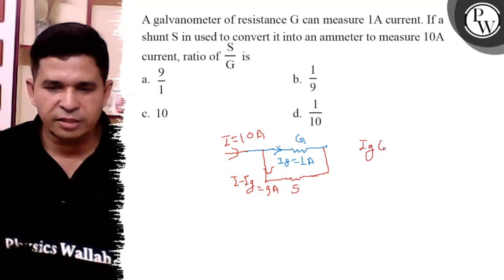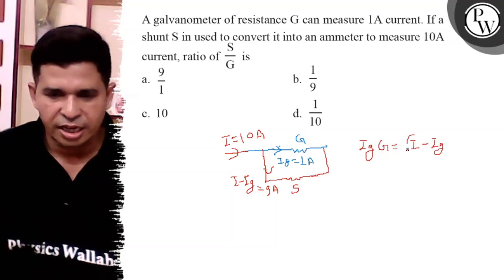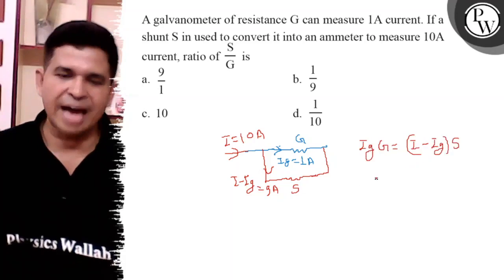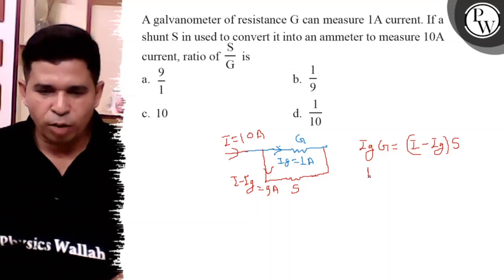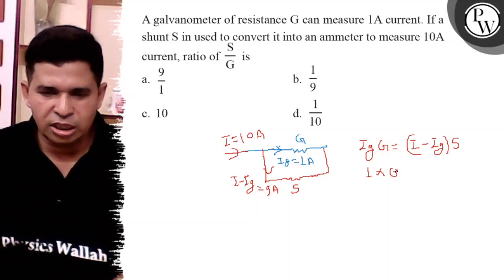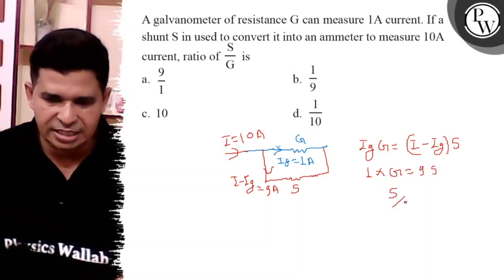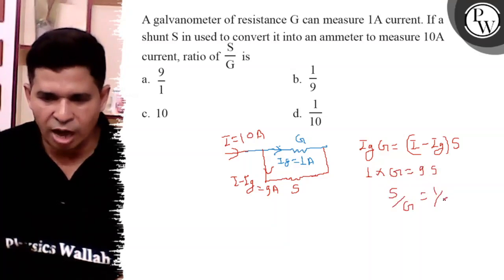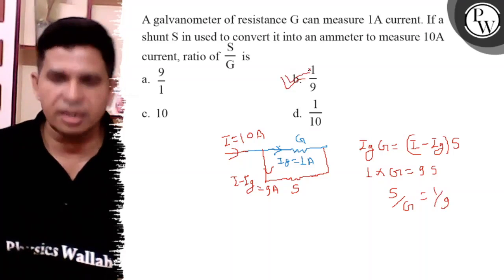So IG into G is equal to I minus IG into S, because in parallel voltage is constant. So IG is 1 ampere into G is equal to 9 into S. So what is S by G is 1 is to 9, so final answer is B, 1 is to 9. Thank you.